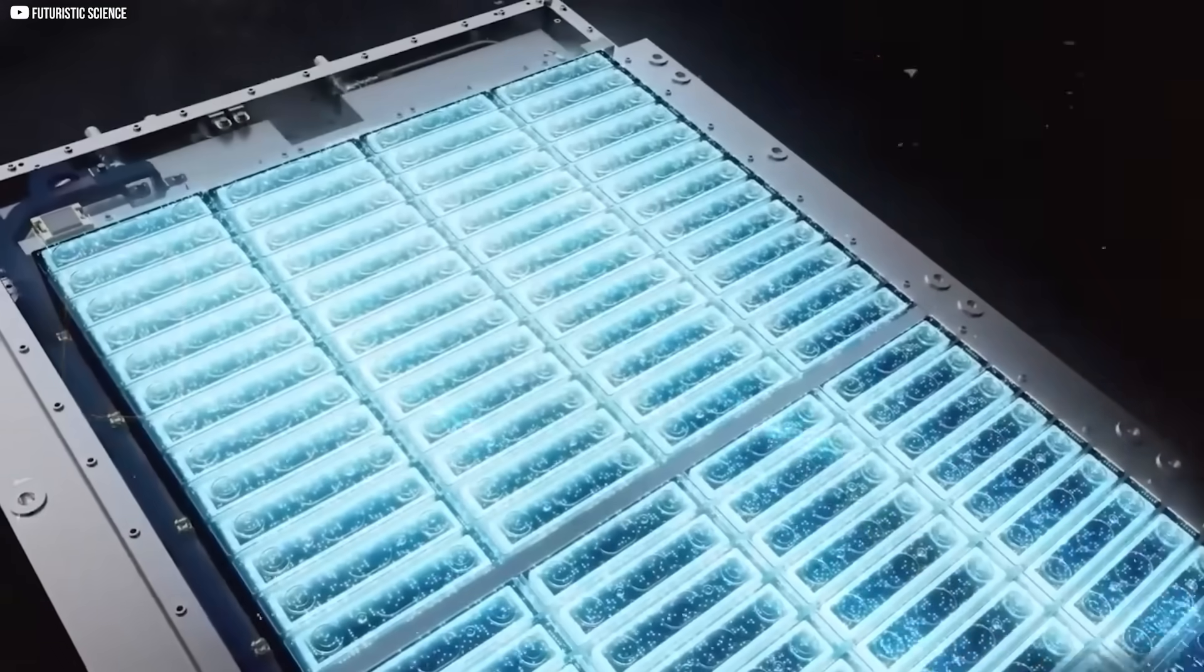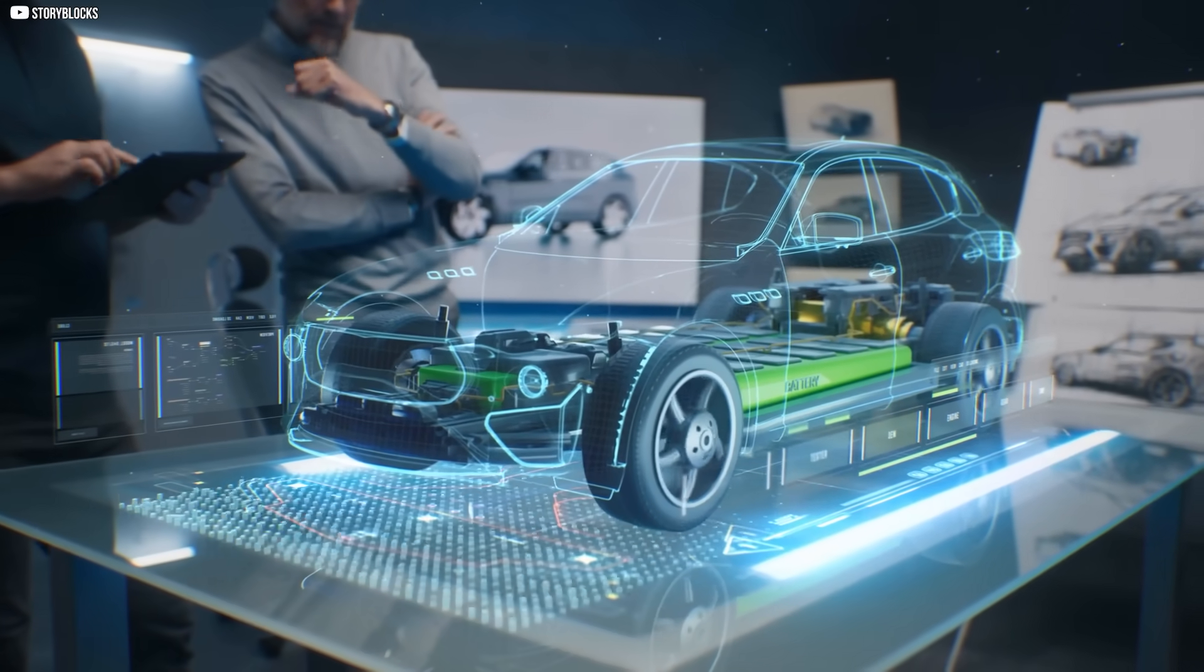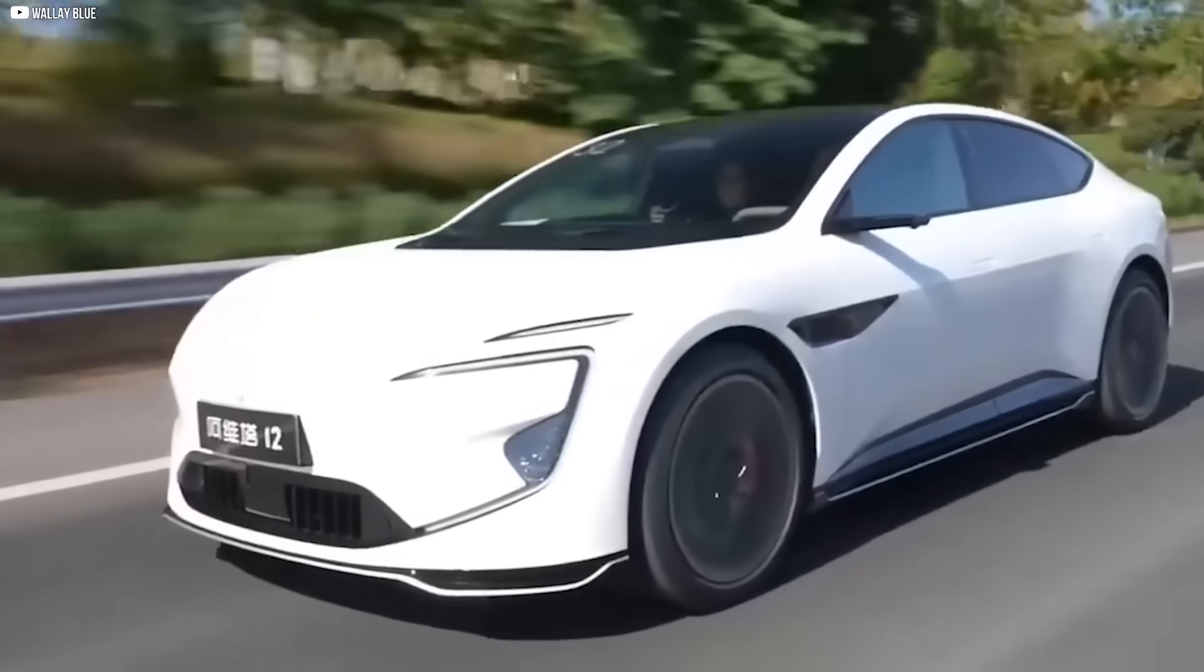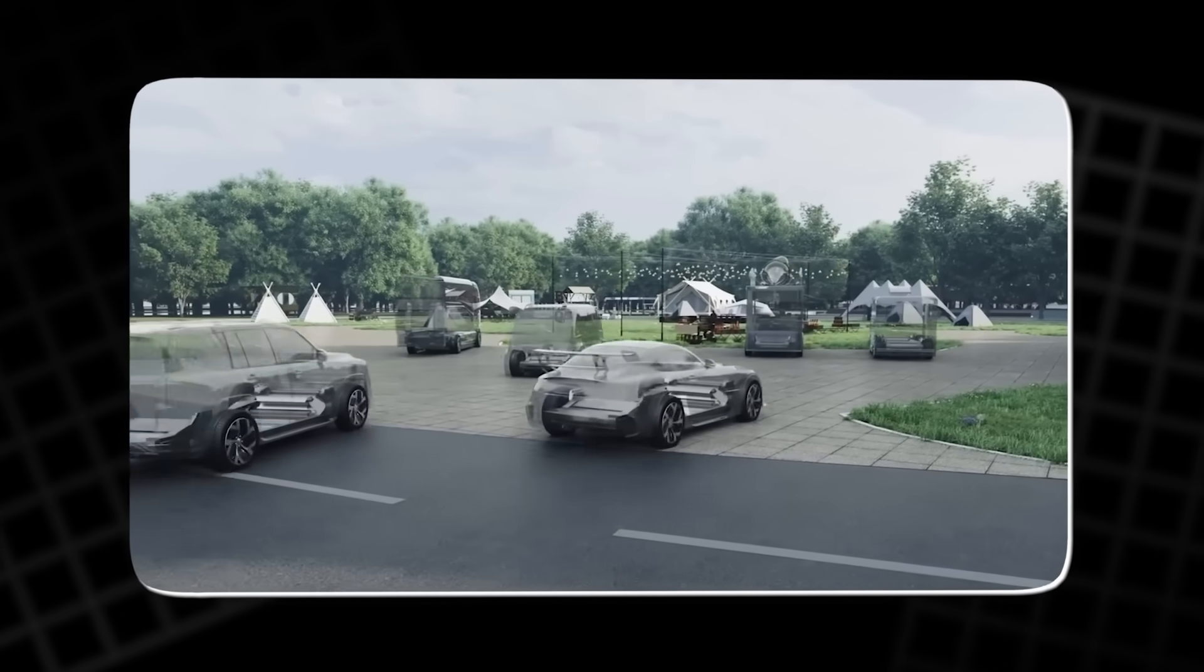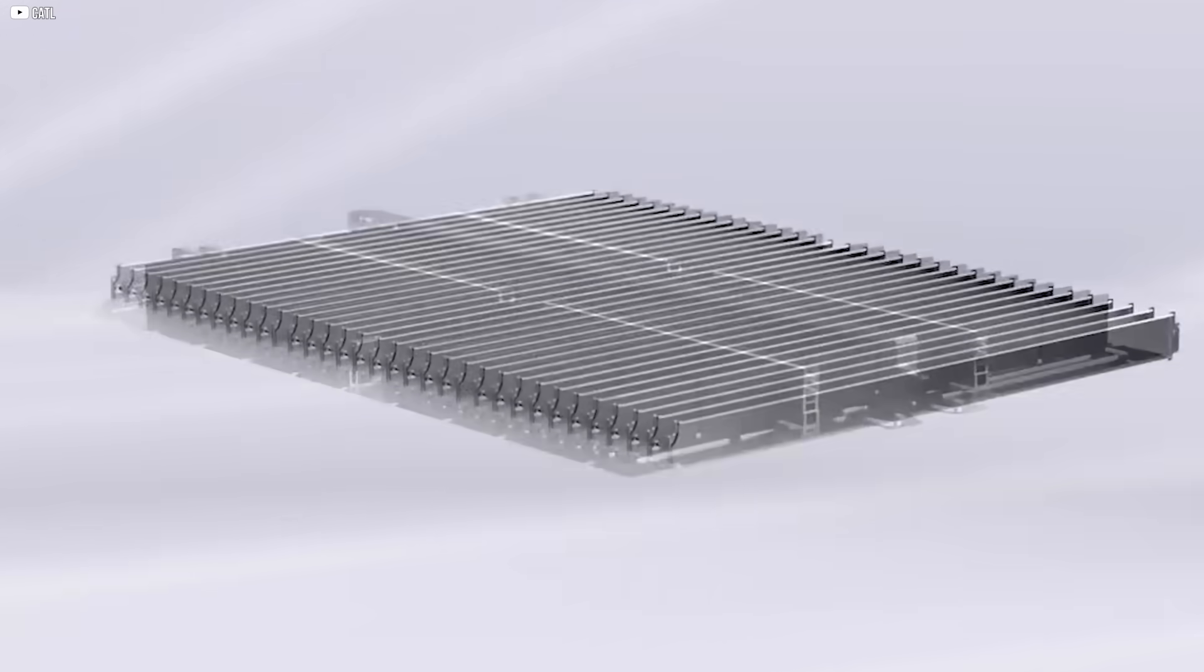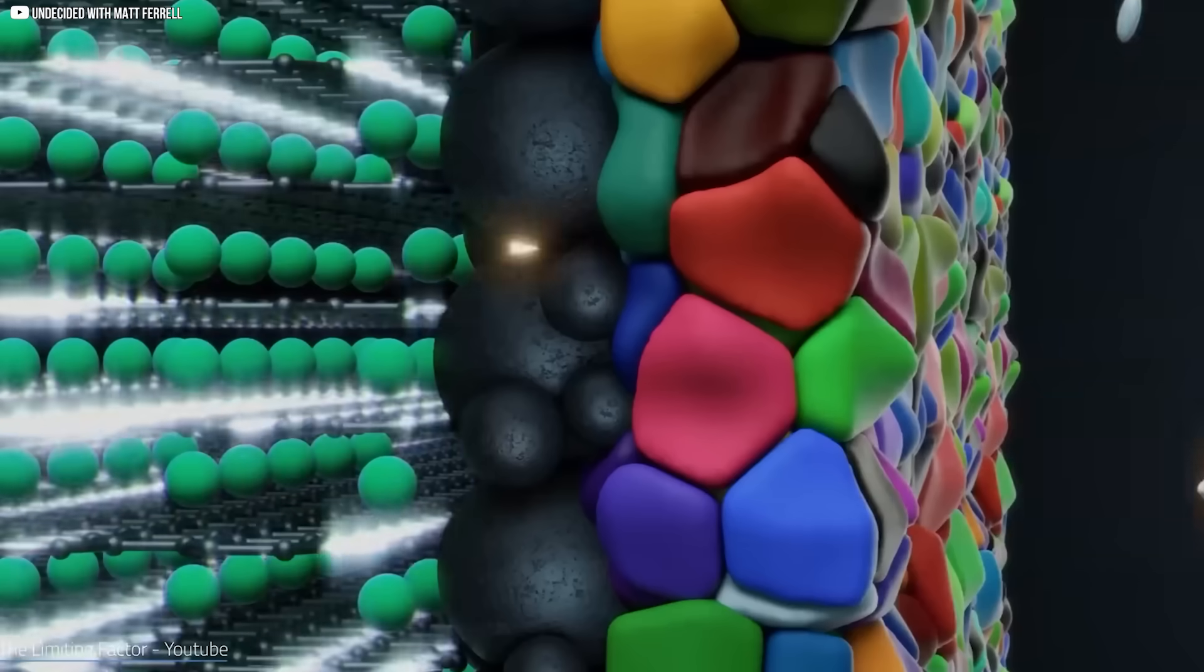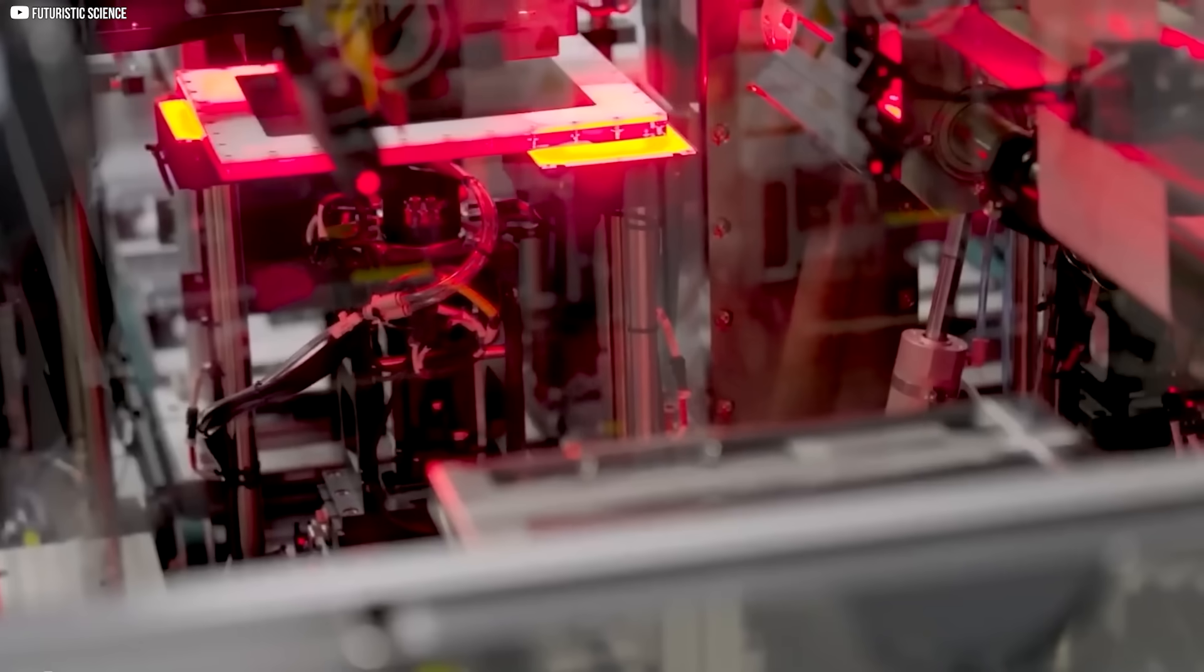Each type of cell plays to its strengths. Sodium-ion handles the quick charging and cold weather performance. Lithium-ion takes care of long-range energy storage and higher power output. This hybrid design allows automakers to deliver vehicles that charge faster and cost less without sacrificing too much on range. It also gives manufacturers breathing room as sodium-ion production scales up. Early models can blend the two chemistries while supply chains and production facilities for sodium-only packs continue to grow.